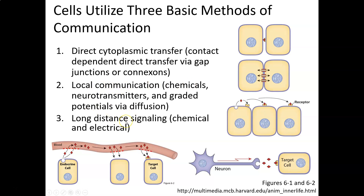The third type is long distance communication, which can be chemical or electrical. A great example of a long distance chemical signal would be an endocrine cell releasing hormones into the blood, which then travel to a different target cell. Or an action potential moving down a neuron — say from the spinal cord all the way down to your big toe — which is an electrical signal, and really just chemical anyway if you think about it.